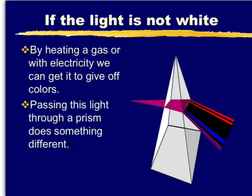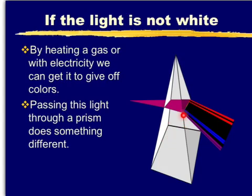If the light is not white, for example by hitting a gas, or by passing electricity through the gas, we can get the gas to give off colours of light. Passing this light through a prism like this will show up all the different colours of light given off by the gas.